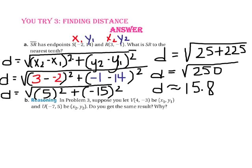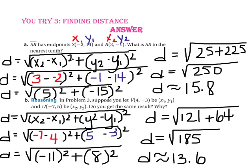For part B, would we get the same result if in Example 3 we let V at (4, negative 3) be (x₁, y₁) and U at (negative 7, 5) be (x₂, y₂)? Plugging these values into our formula, even though the differences of our coordinates are opposite — negative 11 instead of 11, and 8 instead of negative 8 — when we square those values, they are the same. So yes, even though we switched the order of our coordinates, we still get the same distance.